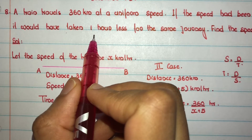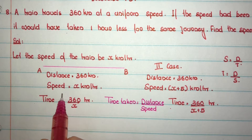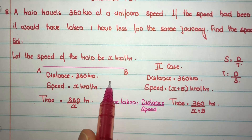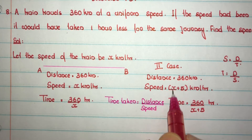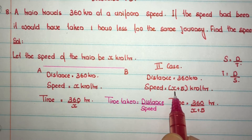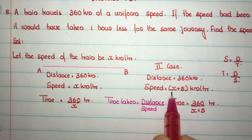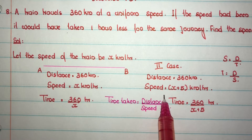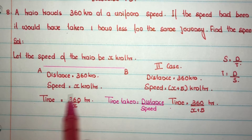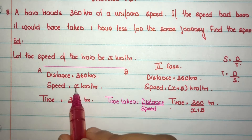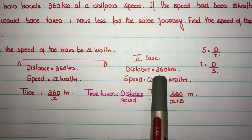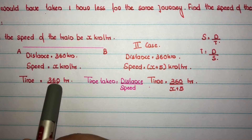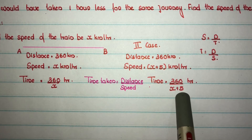Since the second case takes 1 hour less, consider an example: first case at x km/h covers 360 km in 5 hours. Second case at (x+5) km/h covers the same 360 km in 4 hours — that is 1 hour less. So first case time minus second case time equals 1 hour. Therefore: 360/x minus 360/(x+5) equals 1.